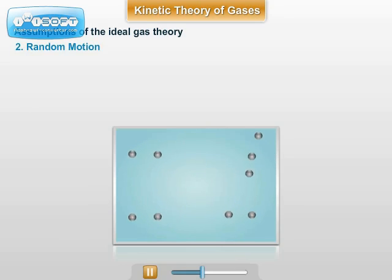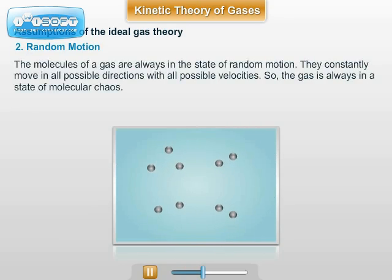Number 2: Random motion. The molecules of a gas are always in the state of random motion. They constantly move in all possible directions with all possible velocities. So, the gas is always in a state of molecular chaos.